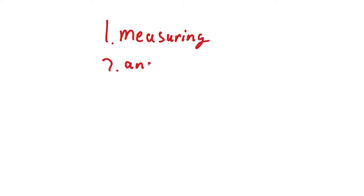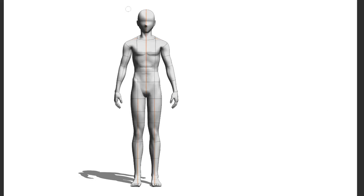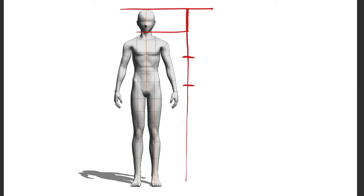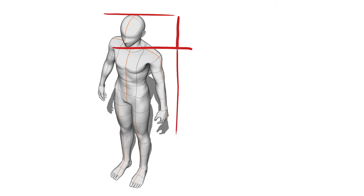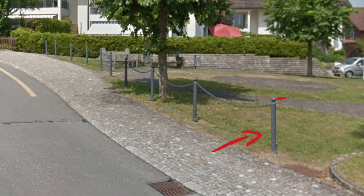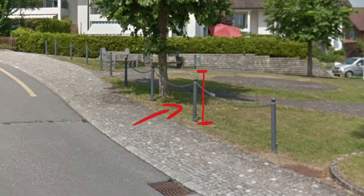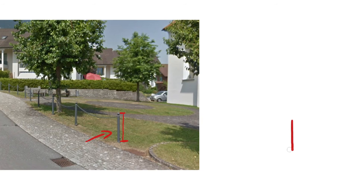There are three techniques that are the core of observation: measuring, angles, and landmarks. Measuring involves using an object in the scene as a ruler. When drawing characters, we use the head as a ruler because we use it to measure proportions. This is a very two-dimensional technique — so if you're measuring poles, for example, you take the height of one pole and compare it to the height of poles in the background. Those will be smaller because they're further from the camera, but when measuring you just use the absolute height, so forget about all the perspective stuff.